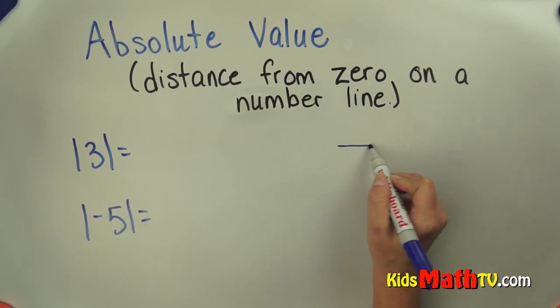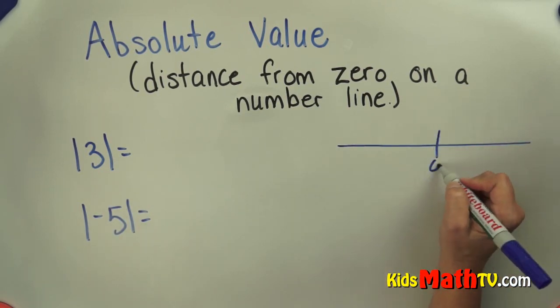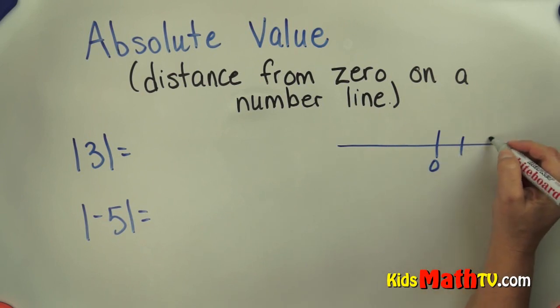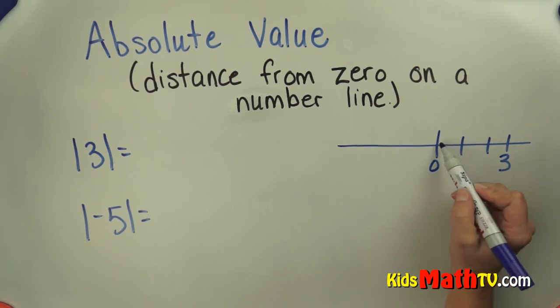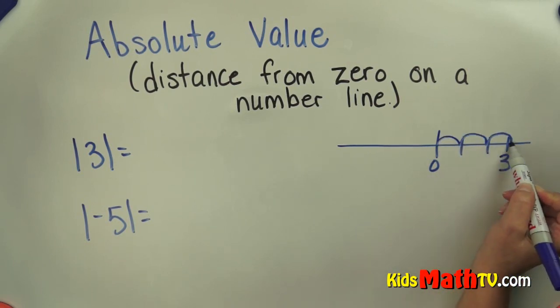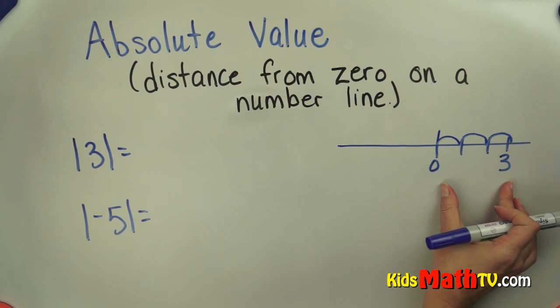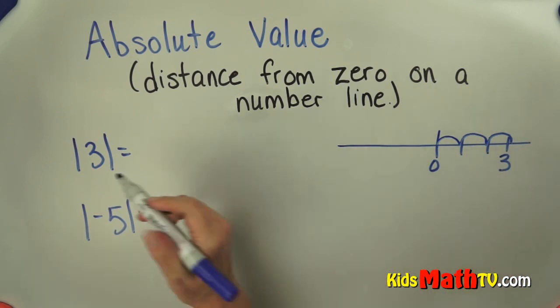To do that, I'm simply going to draw a quick number line. Here's zero. Three is right here on the number line. So how many spaces from zero is three? Well, here's one, two, three. It's three jumps or three spaces from zero. So the absolute value of three is three.